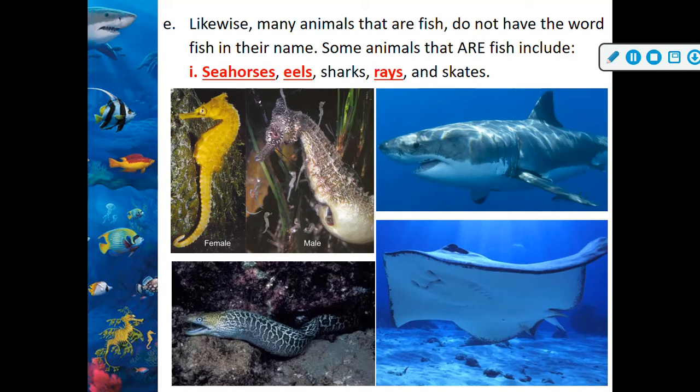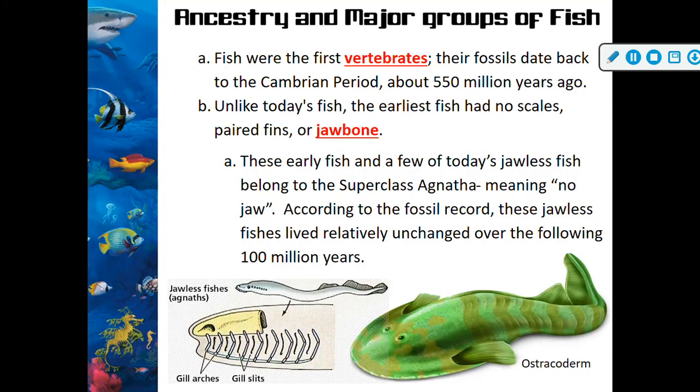Likewise, many animals that are fish do not have the word 'fish' in their name. These include seahorses, eels, sharks, rays, and skates. This is a broad overview — we'll get deeper into things as we go throughout the semester.